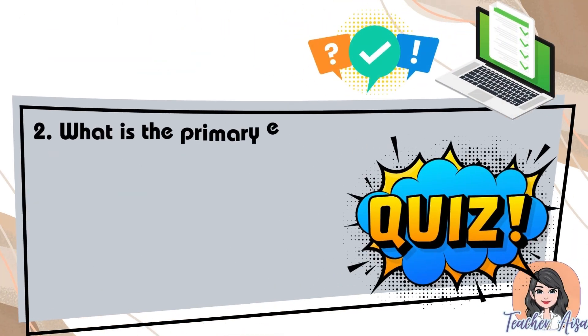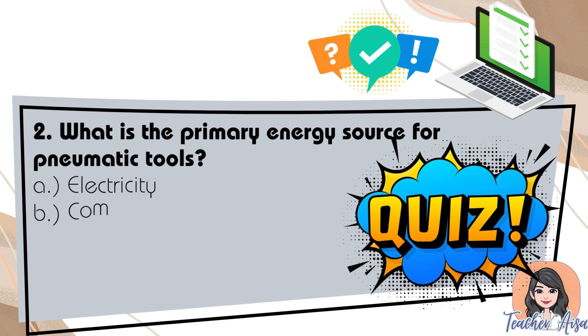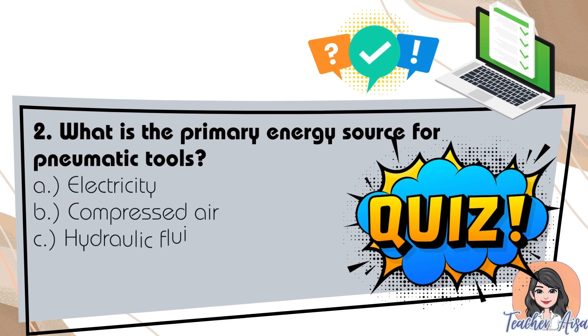Question two: what is the primary energy source for pneumatic tools? A. electricity, B. compressed air, C. hydraulic fluid, D. battery power.